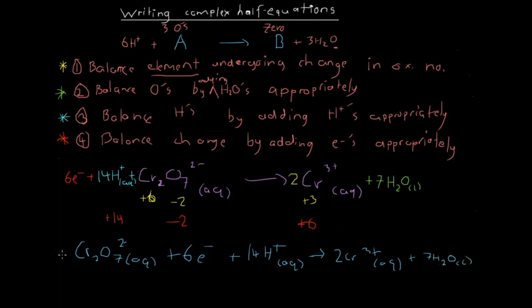So the final half equation is: Cr₂O₇²⁻ + 14H⁺ + 6e⁻ → 2Cr³⁺ + 7H₂O. These four steps allow us to both write and balance a very complex half equation involving different atoms and different ions. They're pretty simple to memorize, so just remember those four steps.